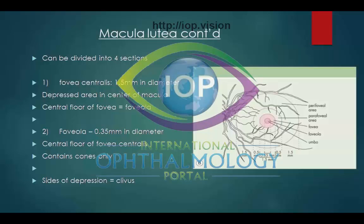The macula lutea can be divided into four sections. The fovea centralis has a diameter of 1.5 mm. It has a central floor known as the foveola, which is 0.35 mm in diameter and contains only cones. The sides of this depression are known as the clivus.